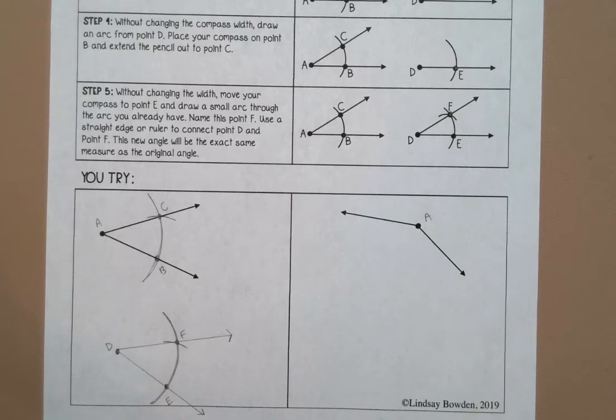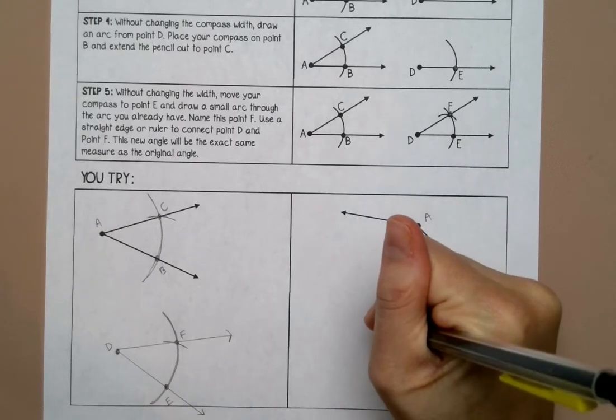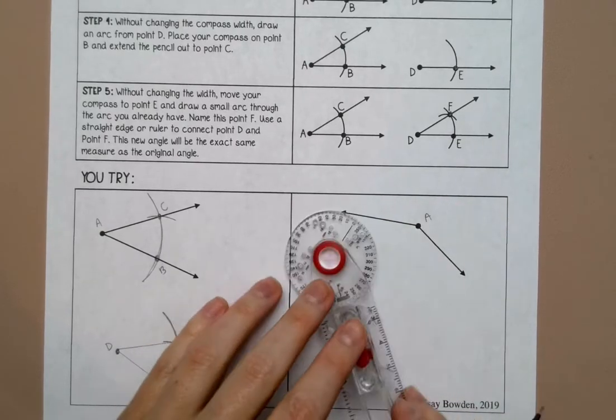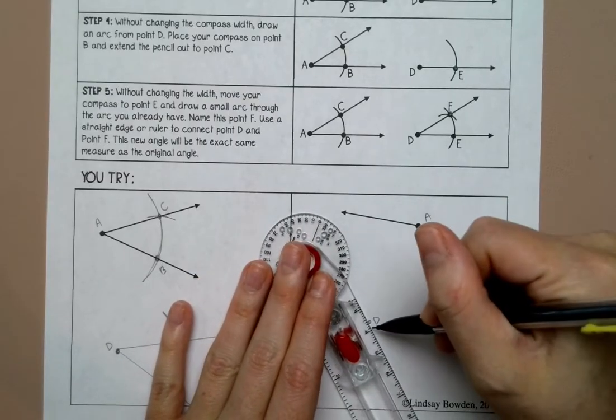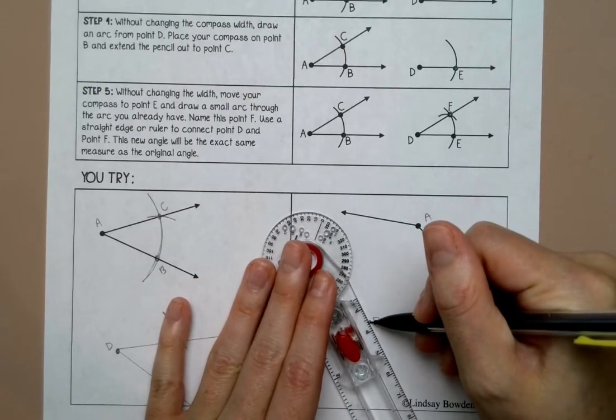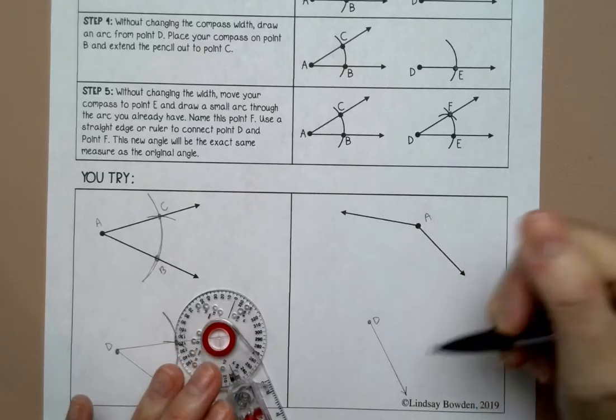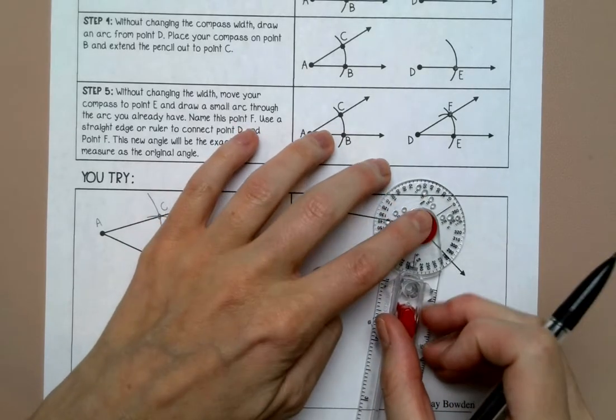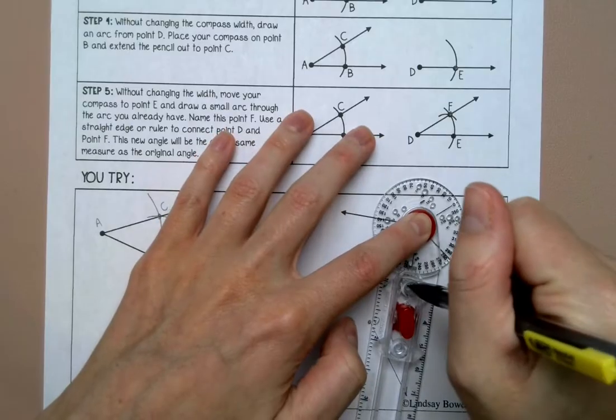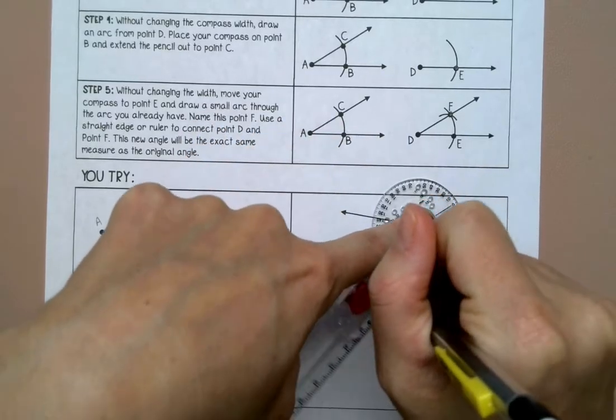I'm going to label this A. I'm going to put a vertex down here and label it D. I'm going to draw one of the rays for D and try to make it look similar to this one. Then I'm going to draw an arc through A, it doesn't matter how big as long as it goes through both rays, and I'm going to do the same thing down here without moving the width.